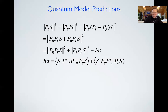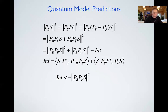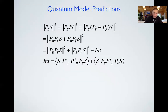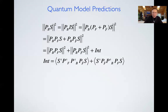In the general mathematical argument, the probability of bank teller can be written by inserting an identity matrix — which breaks into the feminist subspace and its orthogonal complement. When you square the resulting sum, you get the sequential probability of feminist-then-bank-teller, plus the sequential probability of not-feminist-then-bank-teller, plus an interference term. If the interference term is zero, we obey the law of total probability. But if the projectors don't commute, the interference is non-zero. If this interference is sufficiently negative, the probability of bank teller becomes less than the sequential probability of feminist then bank teller — that's the conjunction fallacy via interference.